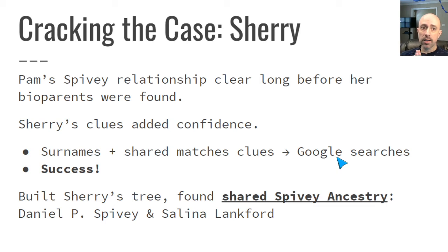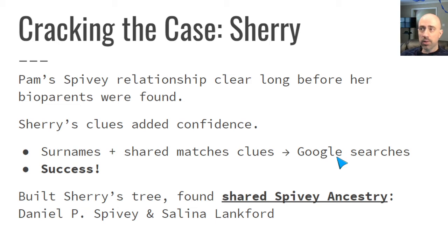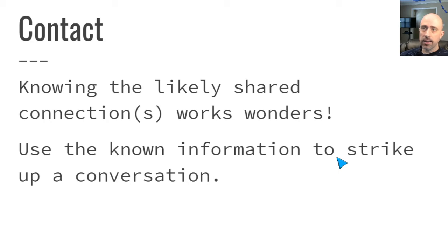It's really amazing how well triangulation can help us make these determinations long before we confirm what we're looking to confirm. Pam's Spivey connections were clear long before her biological parents were found, and Sherry being a good match to Pam added to that confidence. Sherry had a good list of surnames, and by working with those surnames and doing various Google searches with combinations of the surnames on the list, I eventually managed to put together the family tree and found the shared Spivey ancestry: Daniel Spivey and Selena Lankford. With that knowledge, I found this to be a really powerful way to get people involved who probably wouldn't have been involved otherwise.